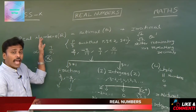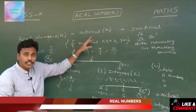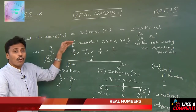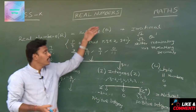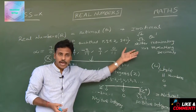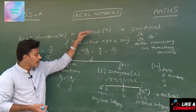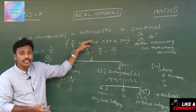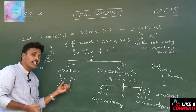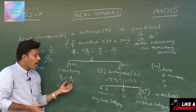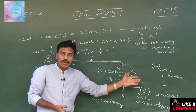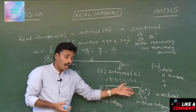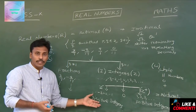But every real number is not a rational, because there are some real numbers which are not rational — for example, irrationals. And every rational number is not an integer, because there are fractions in rationals which are not integers. And every integer is not a natural, because there are negative integers in integers which are not naturals.